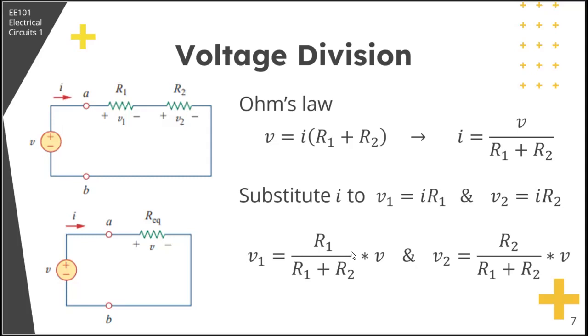Another observation is that the source voltage is divided among the resistors in direct proportion to their resistances. If you look at it, V1 is directly proportional to R1, and V2 is directly proportional to R2. That means the larger the resistance, the larger is the voltage drop. If R1 is large, V1 the voltage drop across R1 is large. If R2 is small, then V2 is small. This principle is called the principle of voltage division, and this circuit is called a voltage divider. Your voltage in the source is divided between the two resistors.